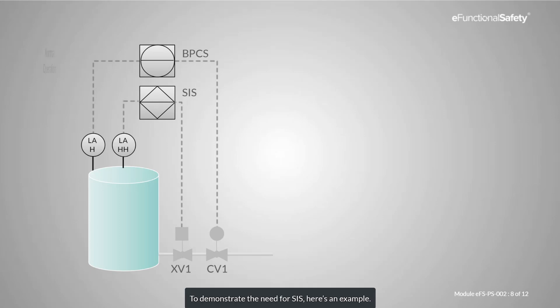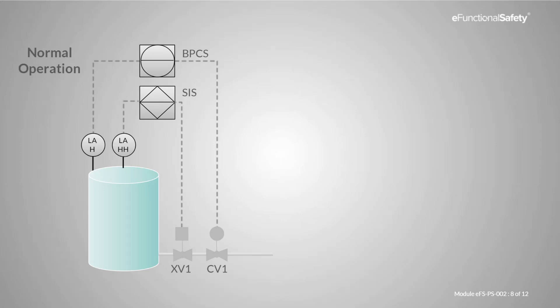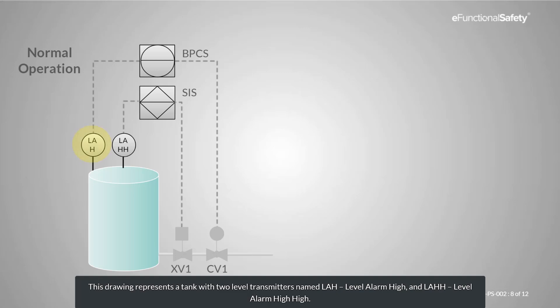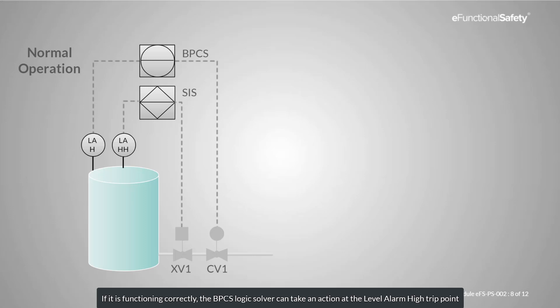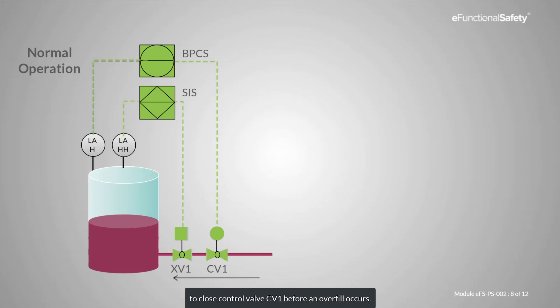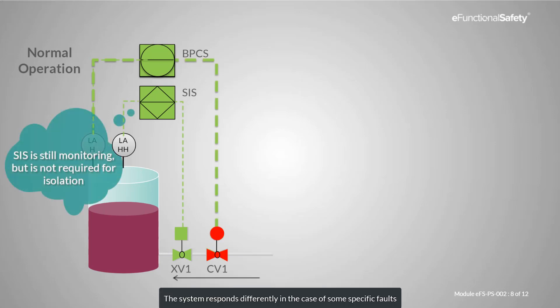To demonstrate the need for SIS, here's an example. This drawing represents a tank with two level transmitters named LAH and LAHH. Each transmitter is connected to separate logic solvers — one for basic process control, the other for safety. If it's functioning correctly, the BPCS logic solver can take an action at the level alarm high trip point to close valve CV1 before an overfill occurs. The system responds differently in the case of some specific faults that the functional safety standards call dangerous failures.